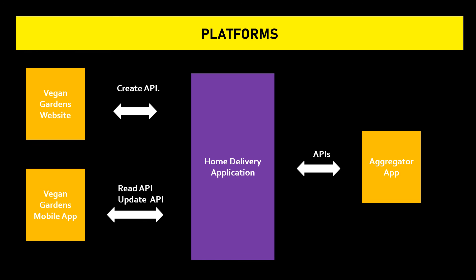For example, if the restaurant wants to reduce the update time limit from three hours to two hours, the changes are required only in the Update API logic, and once redeployed everything works seamlessly. Hopefully, we were able to provide an overview of what an API is, how it works, and how it can be used across multiple platforms. We have not gone into technical details intentionally, as we wanted to keep it simple for easy understanding.